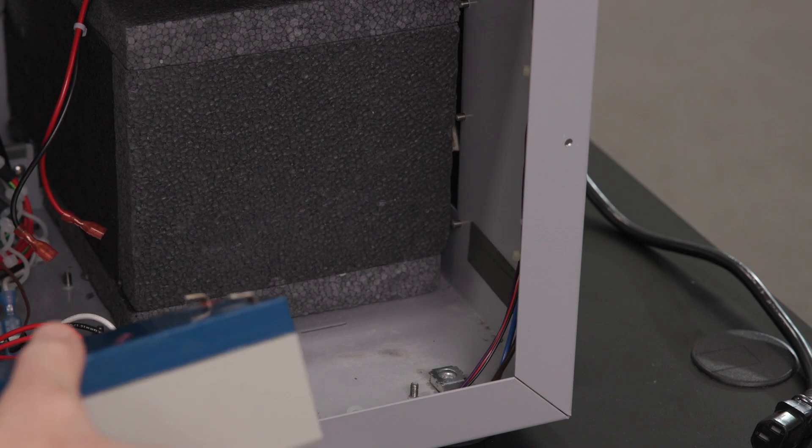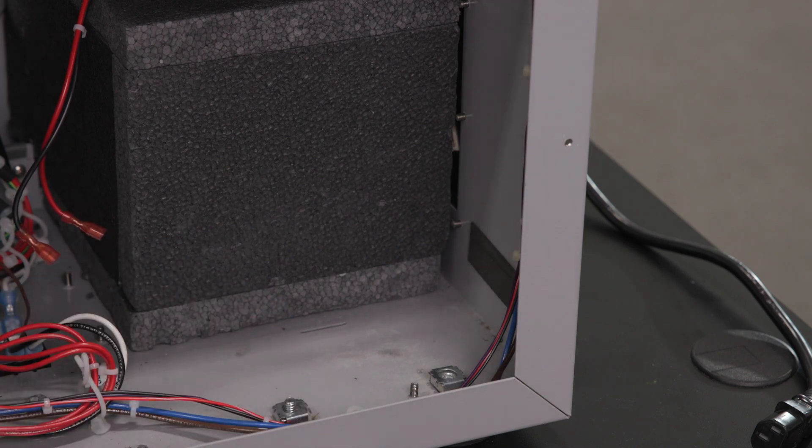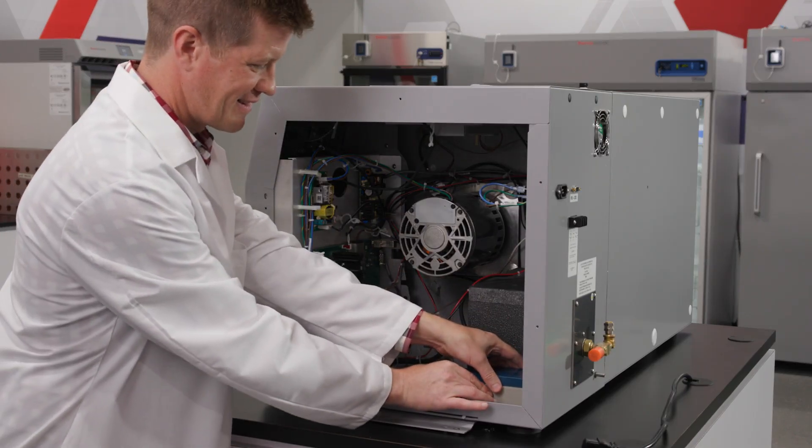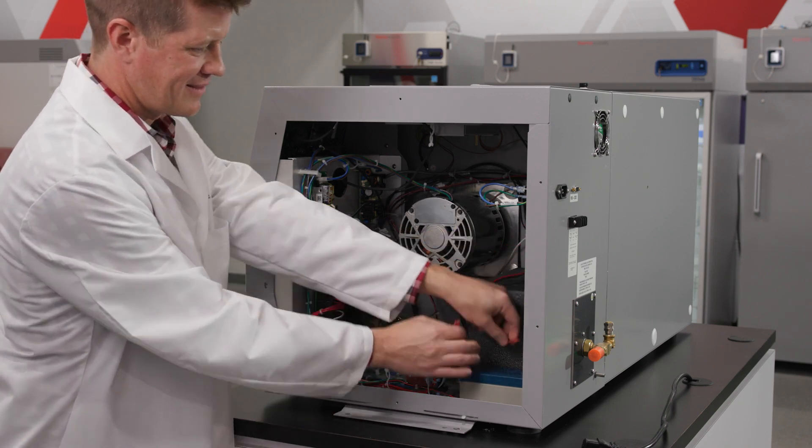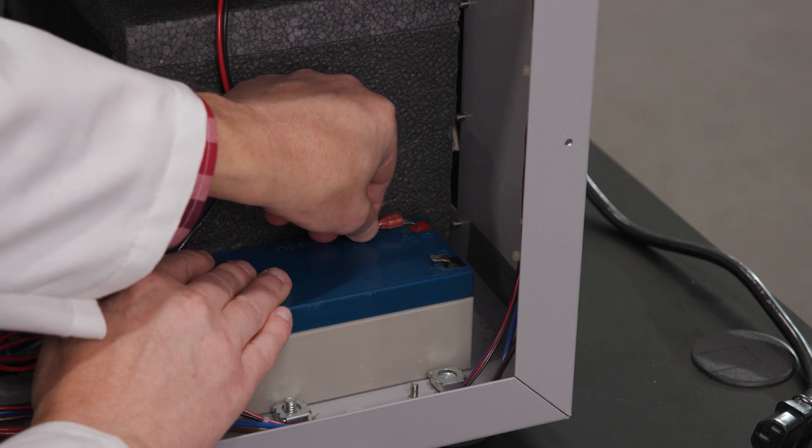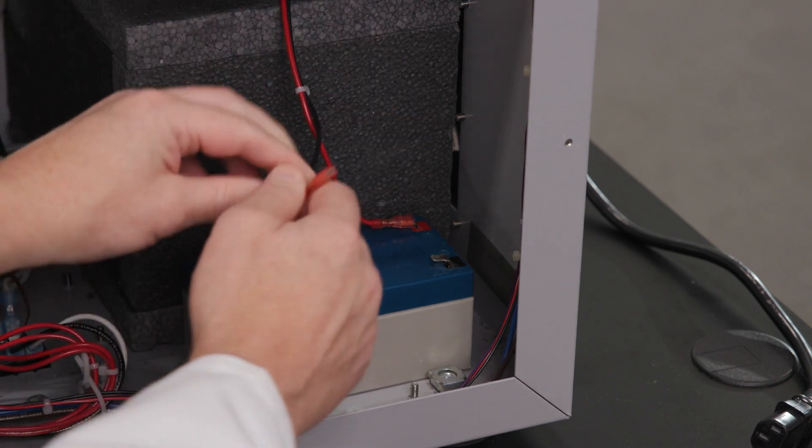Once the old battery has been removed, the new battery can be placed into the unit. When connecting the wires back to the terminals, follow the reverse procedure by attaching first the wire to the positive red terminal and then attaching the wire to the negative or black terminal.